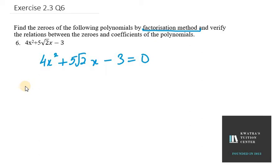Now what we need to take is a and c. So a is 4 and c is 3. So 4 into 3 is 12.